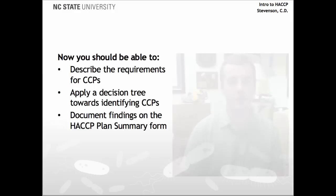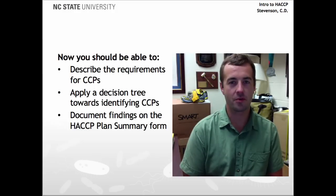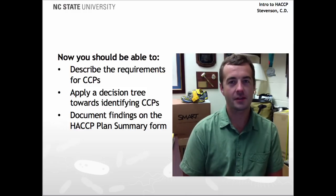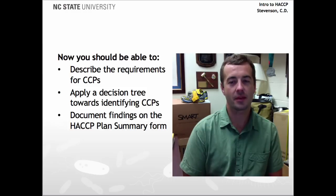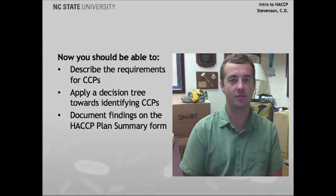In summary, now you should be able to describe the requirements for what makes a critical control point. You should be able to apply a decision tree for determining critical control points. And last of all, you should be able to document the findings of your critical control point identification on a HACCP plan summary form.